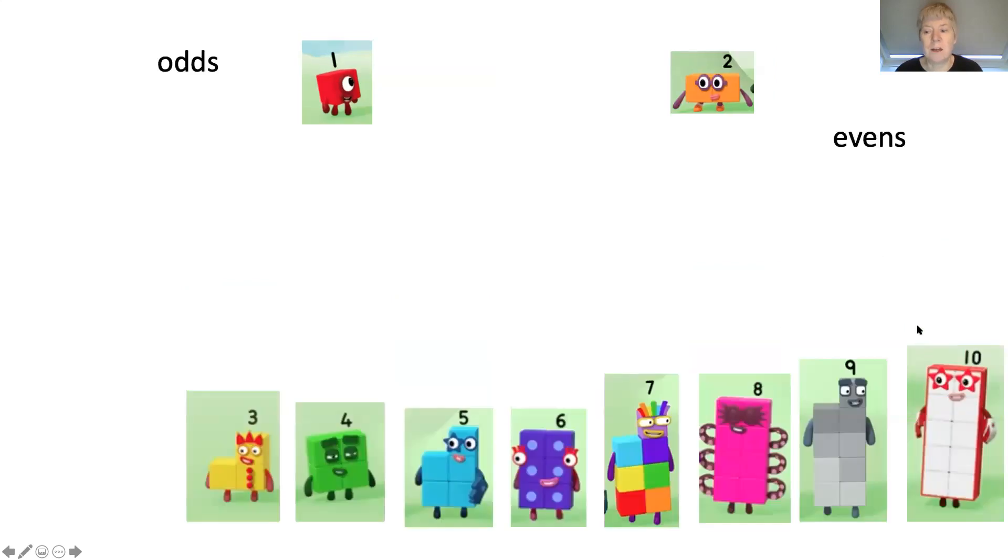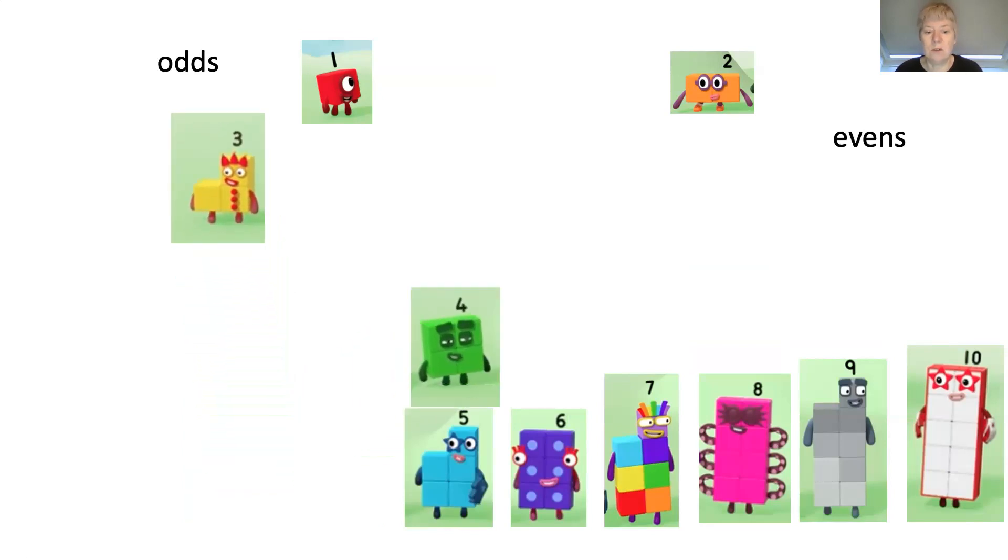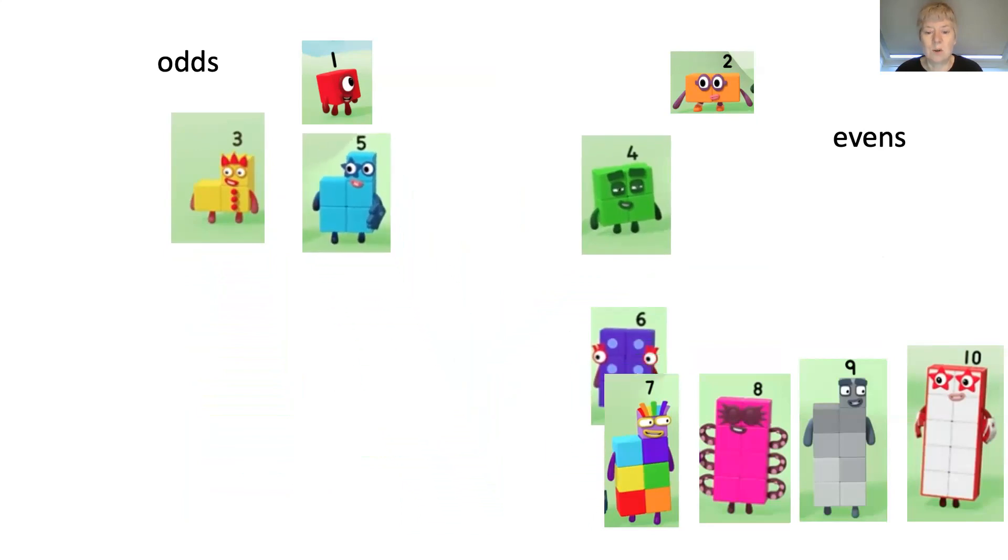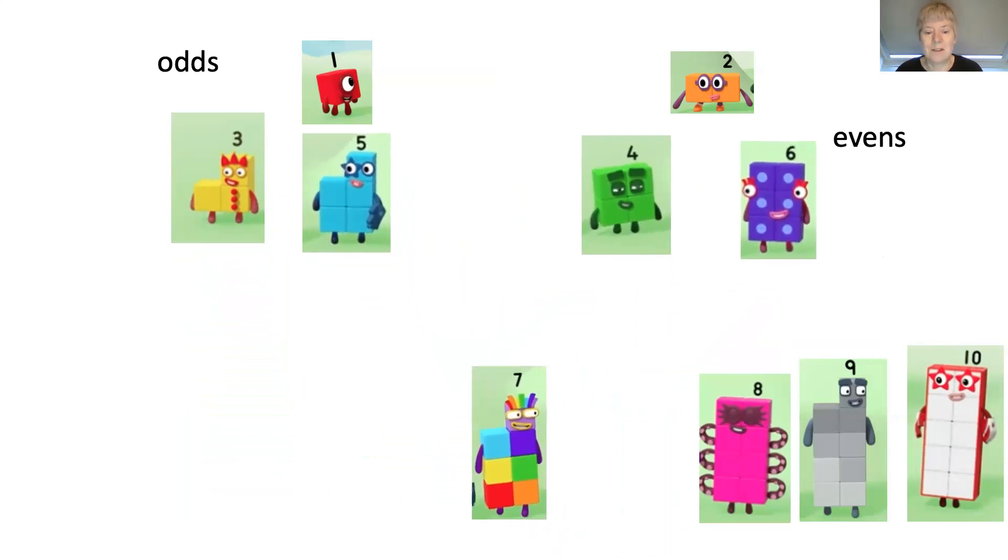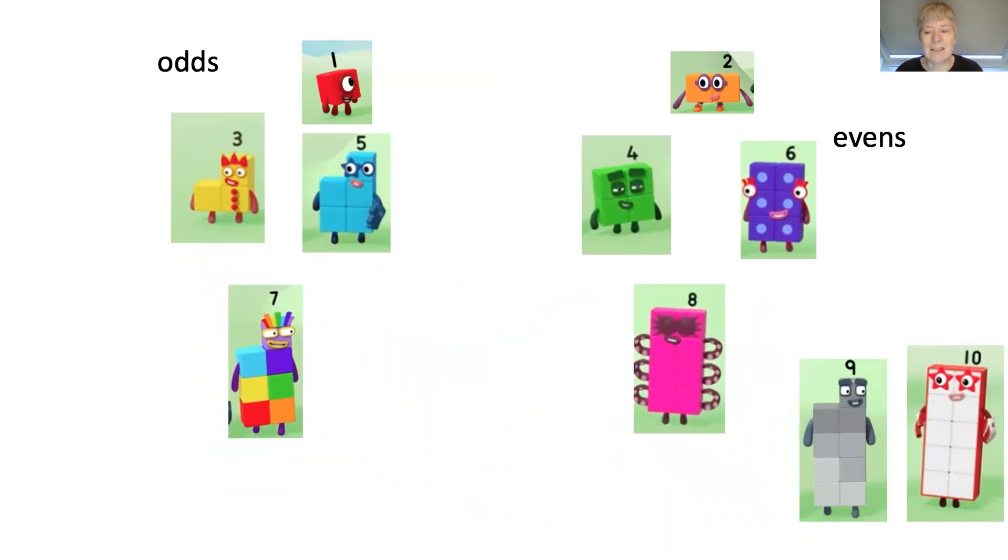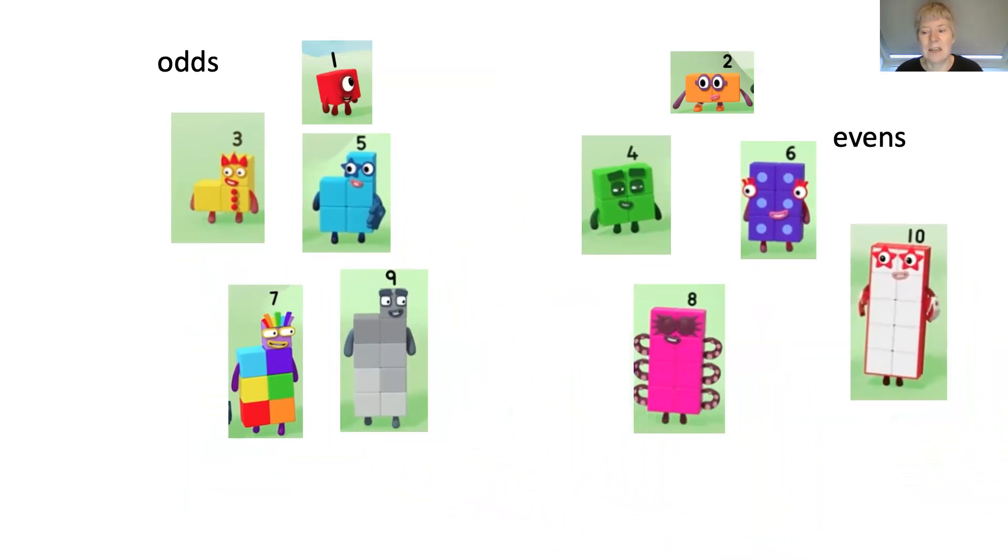What I'm going to do is I'm going to get the number blocks to put themselves into their teams. Are you ready? So number three is going to odds, number four is even, number five is odds, six is even, seven is odd, eight is even, nine is odd and ten is even.